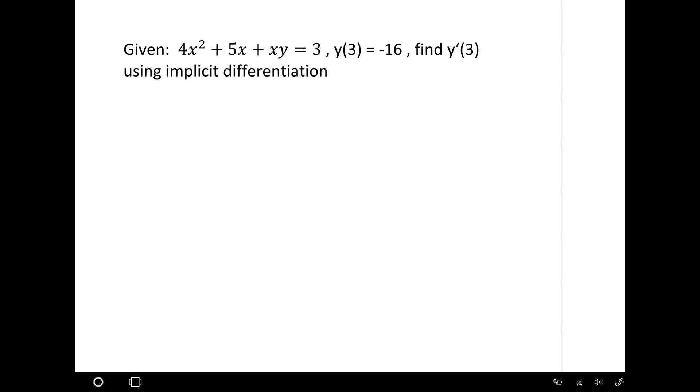This is not solved for y. So one option would be to solve it for y and use regular differentiation, or just leave it as is and use implicit differentiation. Now they give us y(3) = -16, so essentially they're giving us an ordered pair: x is 3 and y is -16. We'll need that because when they ask us to get the derivative at 3, we'll be plugging in this point.